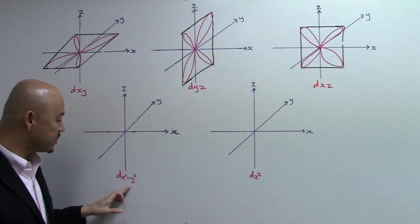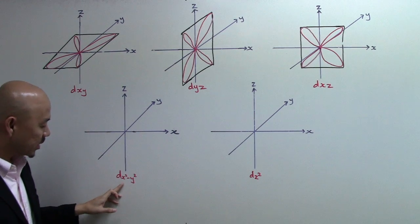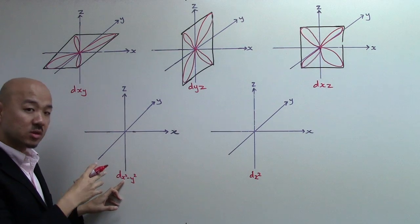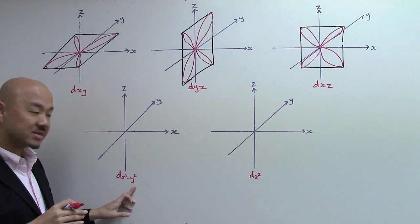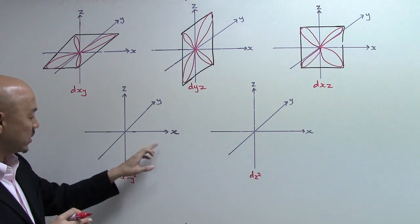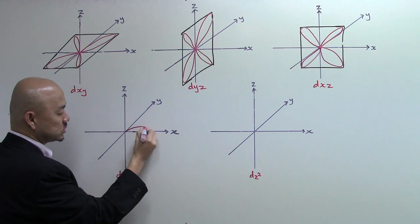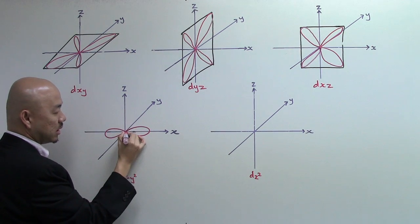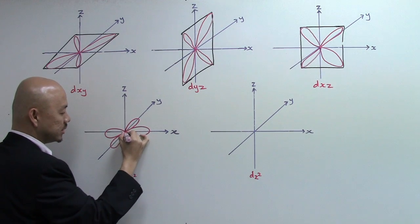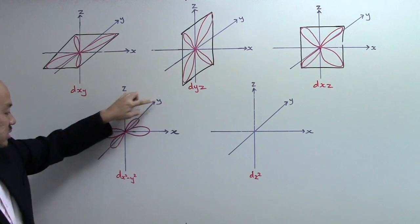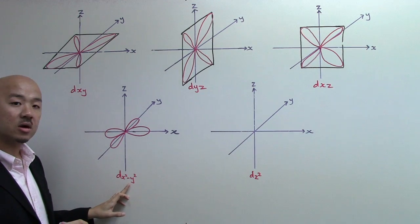Now let me move on to DX² - Y². This is easier. This means that the clover leaf will be aligned along the X and the Y axis. Let's find out where is the X, which is here, and this is the Y. We're going to do a clover leaf. This will be the first dumbbell, and then I will have the second dumbbell going into the paper. This is your X, this is your Y. So this is your DX² - Y² D orbital.